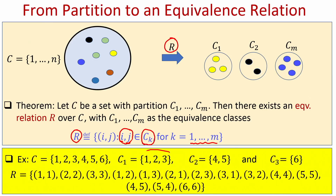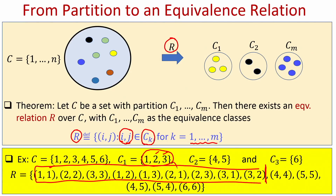I take the first subset {1, 2, 3} and by iterating over all i, j present in this subset I add ordered pairs: (1,1), (2,2), (3,3), (1,2), (2,1), (1,3), (3,1), (2,3), (3,2). With respect to the second subset {4, 5} I add the ordered pairs (4,4), (5,5), (4,5), and (5,4). With respect to the third subset {6}, I add the ordered pair (6,6).